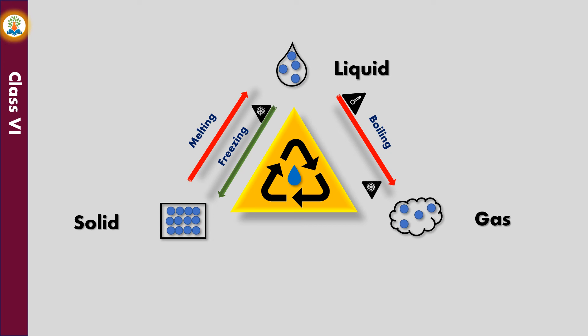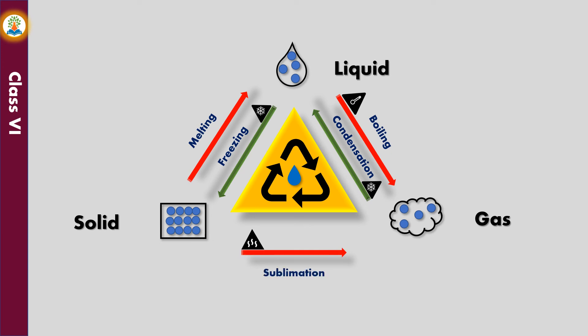On cooling the water vapor, it gradually changes back to water. The process by which a gas changes to its liquid form on cooling is known as condensation. The process of changing from a solid to a gas without passing through an intermediate liquid phase is known as sublimation.